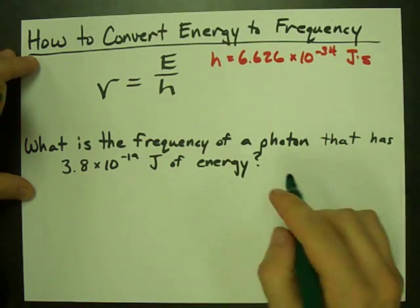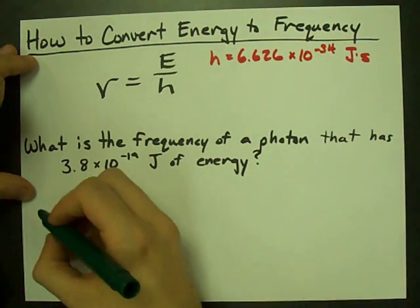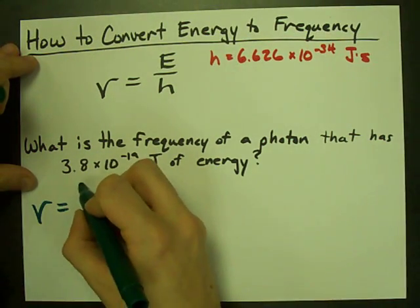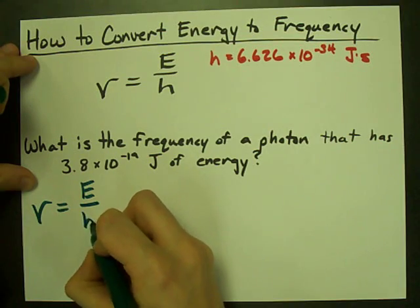What is the frequency of a photon that has that particular energy? The frequency is the energy divided by Planck's constant.